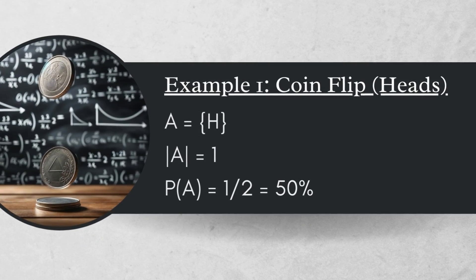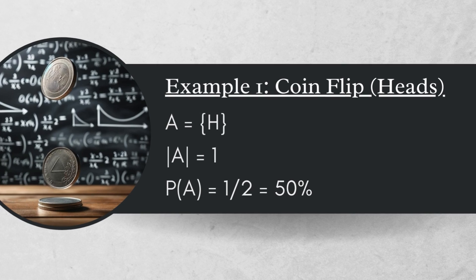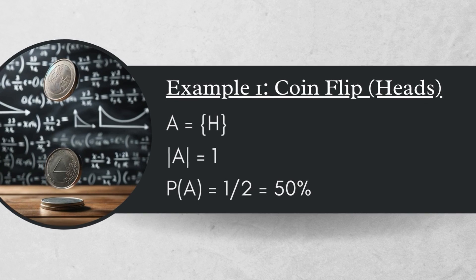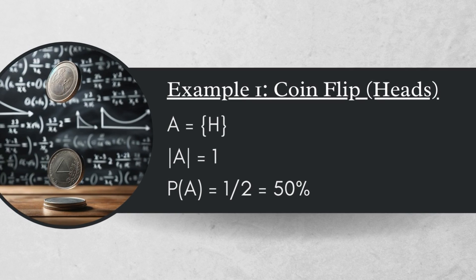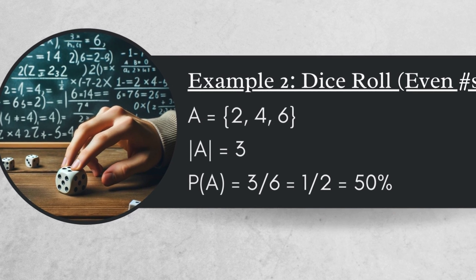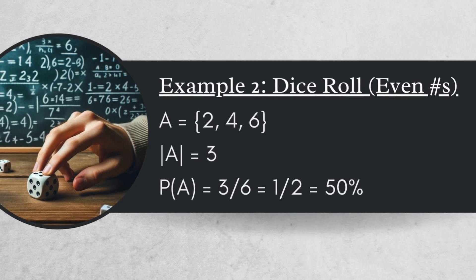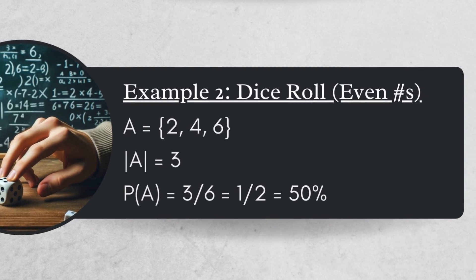The probability of A is then defined as the number of elements in A divided by the number of elements in the sample space. The number of elements in a set is also known as the cardinality of the set. So going back to example 1, if we define event A as the set of all coin flips that result in heads, the cardinality of A is 1, the cardinality of the sample space is 2, and so the probability of A is 1 over 2, or 50%. In the second example, if we define A as the set containing all even-numbered dice rolls, the cardinality of A is 3, the cardinality of the sample space is 6, and so the probability of A is 3 over 6, or 1 half.